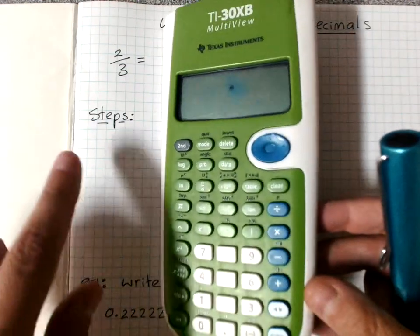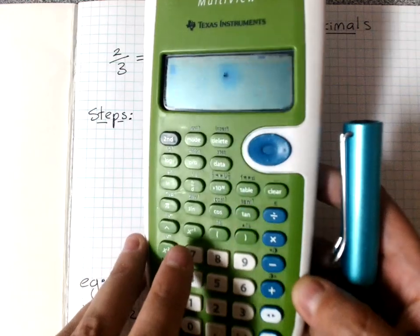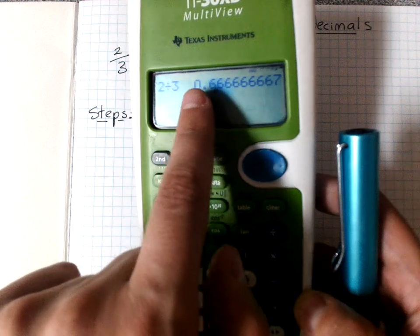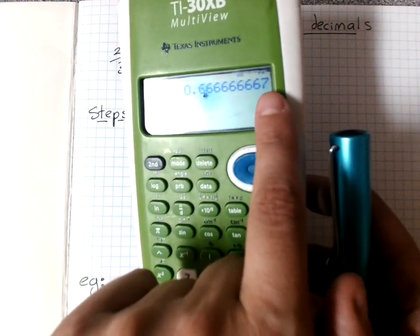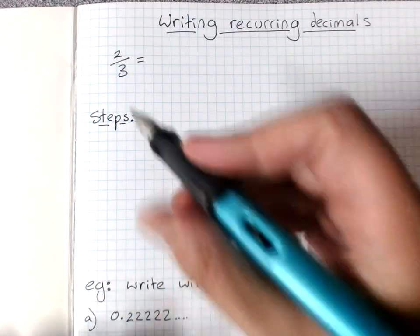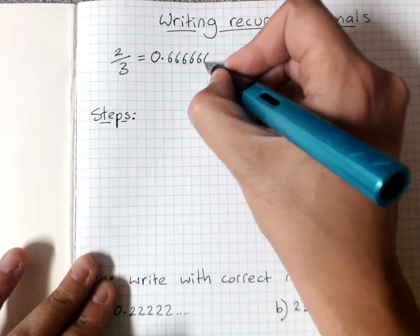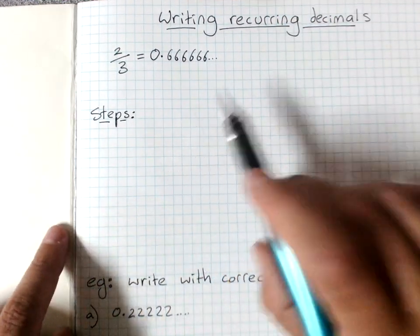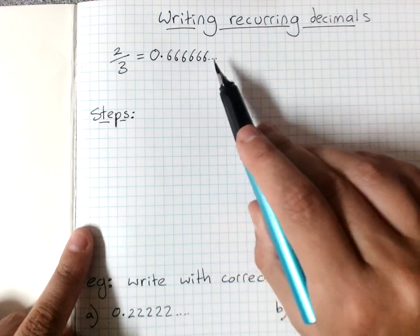So when we do 2 divided by 3, we get 0.666666 going on forever. Now your calculator shows a 7 at the end, and we'll talk about why that is later, but for the moment we ignore it. The little three dots means going on forever. You can see that the repeating pattern here is a 6. We just keep on putting 6s in one after the other.